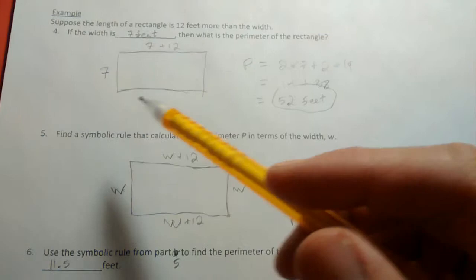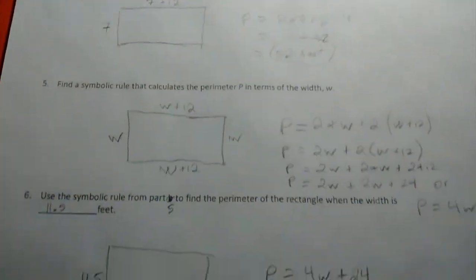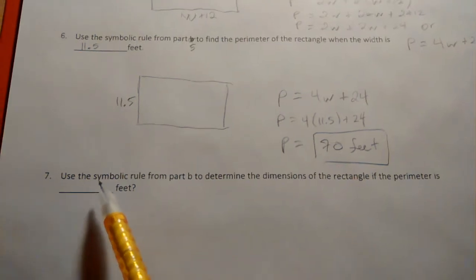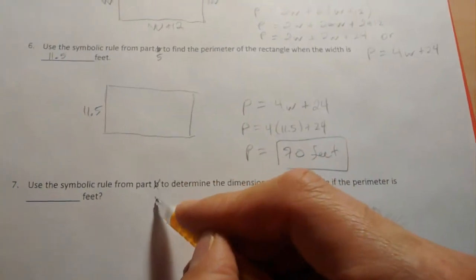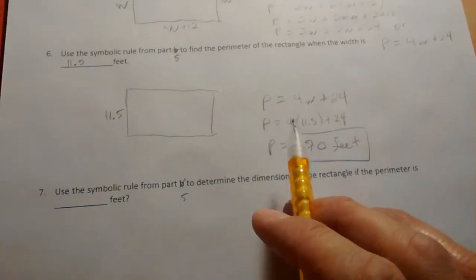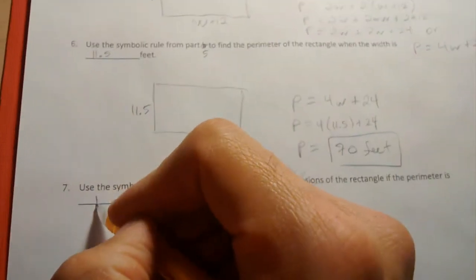We're asking you to do one of these in the activity. Alright, part seven: Use the symbolic rule from part five again to determine the dimensions of the rectangle if the perimeter is 112 feet.